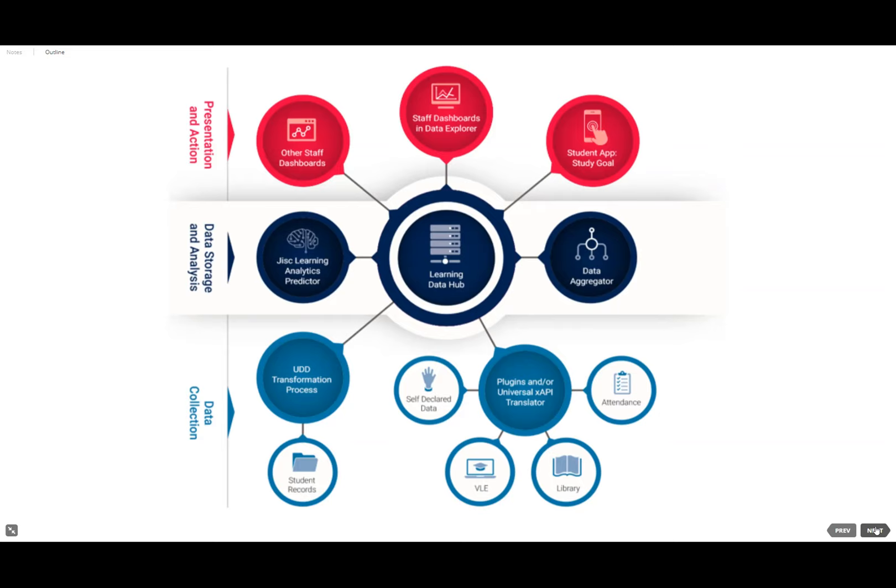The analytics predictor takes two forms: using demographic data from the student record system — entry tariff, distance from campus, etc. — with a historical model using two-thirds of historical data matched against the last third of activity data to build the predictive model. On the right-hand side of the learning hub there's a data aggregator that does the number crunching around traffic lighting — displaying to personal tutors and academic tutors how students are performing in physical attendance, virtual attendance, and attainment, giving red-amber-green indicators. The top layer is the display level: a web dashboard for staff and an app for students.